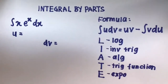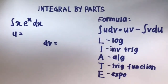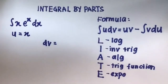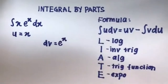So what do we have? We have x and e to the x. X is algebraic, e to the x is exponential — so we have A and E. Following these letters in sequence, the first one we encounter is A, algebraic. So x has to be our U. U is x, and the next thing we find is E, exponentials — so DV is e to the x. Whichever one you pick for DV also gets the DX.